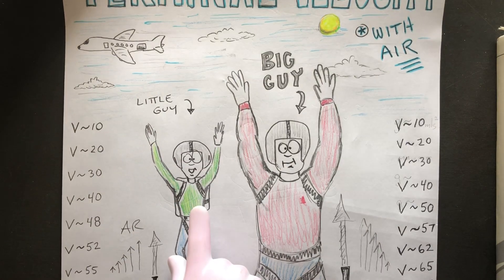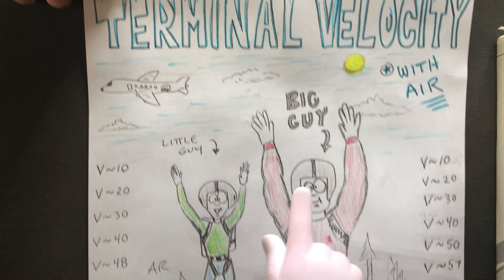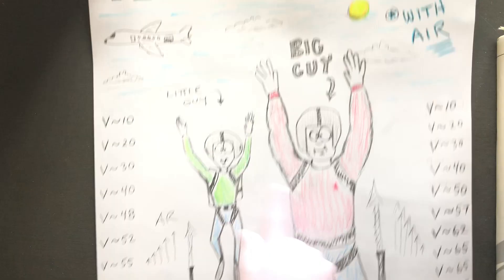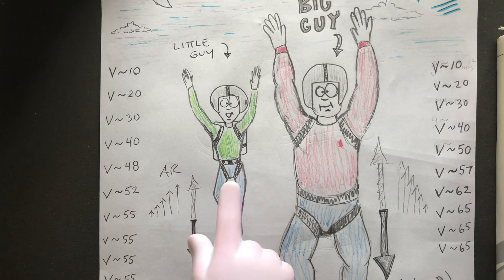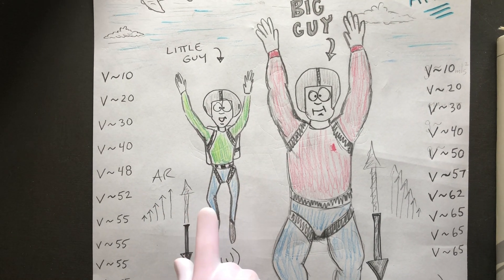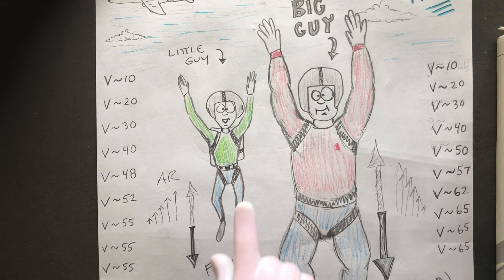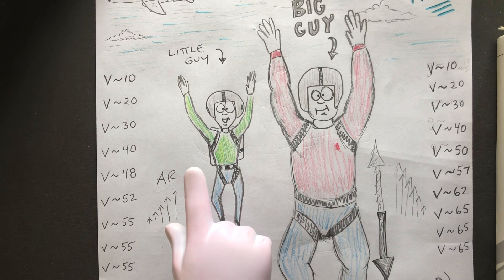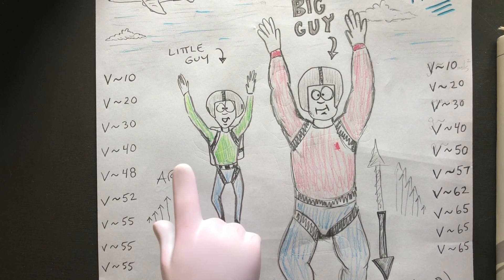In this example, let's say there are two guys going skydiving — one is a much bigger guy and one is the little guy. We're going to assume that both the little guy and the big guy's body orientation is pretty much the same throughout their skydiving, because that does have an effect.